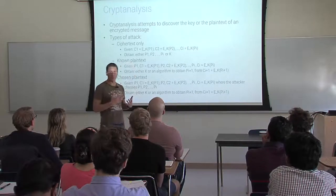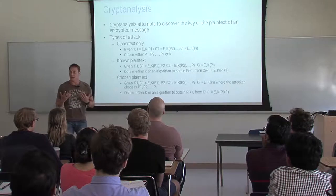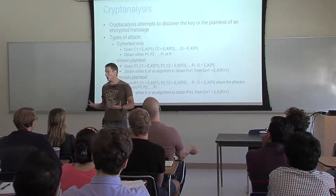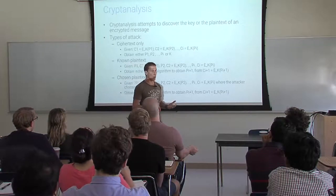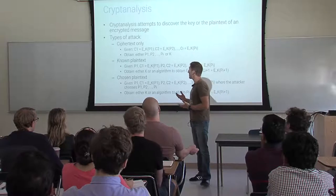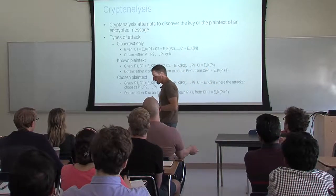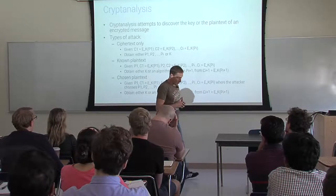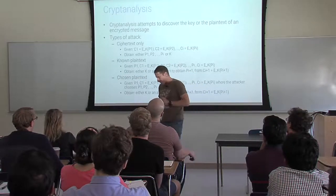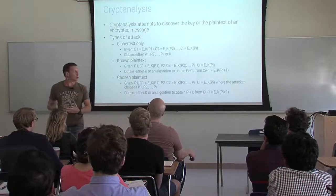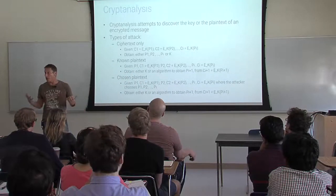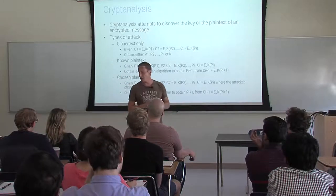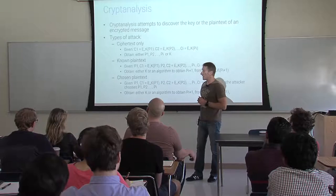Cryptanalysis can happen in different ways. The more difficult and powerful attack is ciphertext-only: you have just samples of stuff that has been encrypted and you have to either extract a key or extract a message. For example, looking at history with the Enigma encryption machine during World War II, initially what they had was a pure ciphertext-only attack — they could only see the encrypted communication between the commands of the Nazi army.